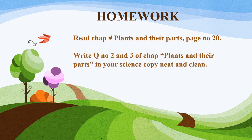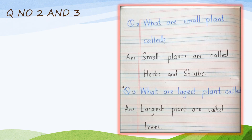For homework, go to 'Plants and Their Parts,' page number 20, and answer question number two and three in your science copy, neat and clean. Question two: What are small plants called? Small plants are called herbs and shrubs. Question three: What are the largest plants called? The largest plants are called trees.